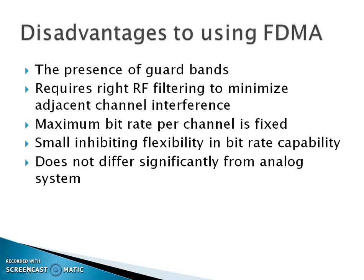Disadvantages of FDMA: the presence of guard bands; requires tight RF filtering to minimize adjacent channel interference; maximum bitrate per channel is fixed; and small inherent flexibility in bitrate capability, which does not differ significantly from analog systems.